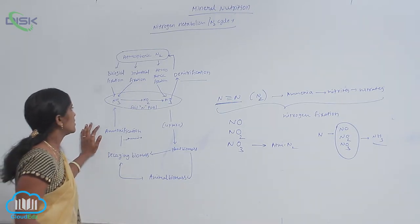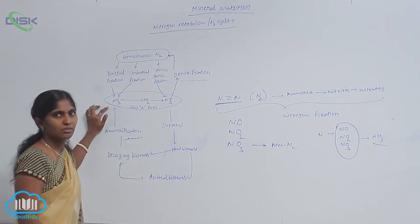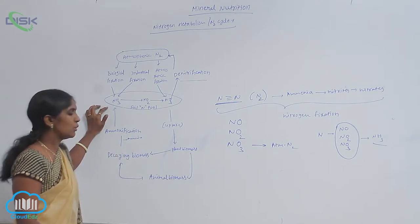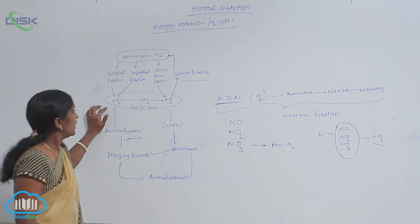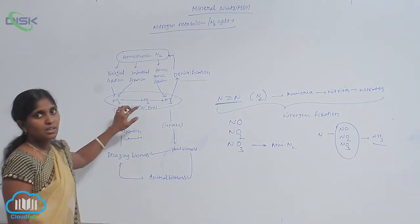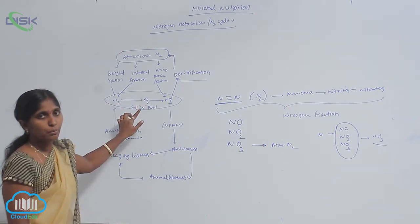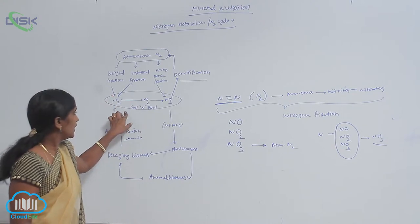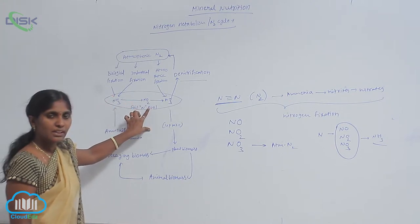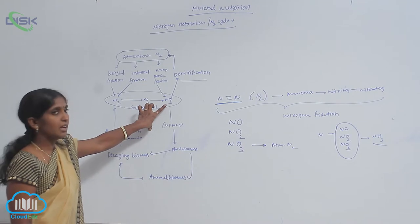Ammonification is also a source of ammonia which is available in soil. It is re-entered into the soil nitrogen pool. From there it is converted into nitrates as well as nitrites.